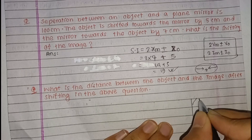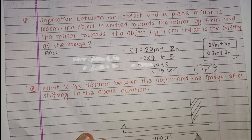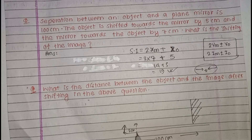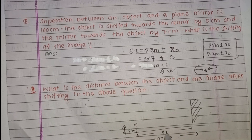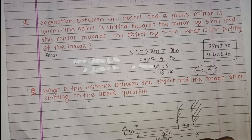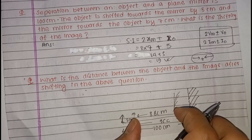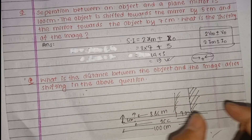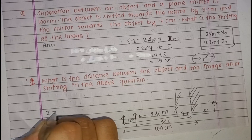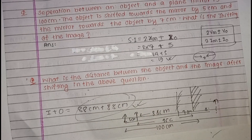What is the distance between the object and the image after shifting? The object is 100 cm away. The object is shifted towards the mirror by 5 cm. This is the same direction for the object shift calculation.